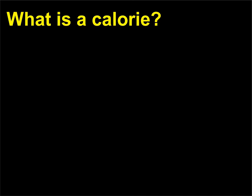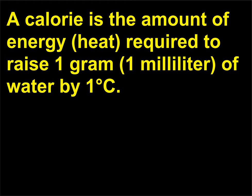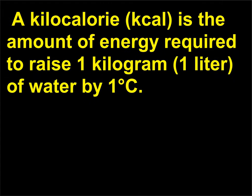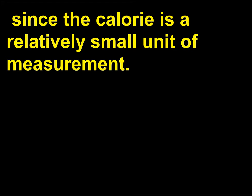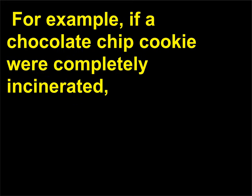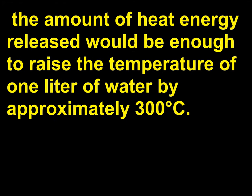What is a calorie? A calorie is the amount of energy (heat) required to raise 1 gram (1 milliliter) of water by 1 degree Celsius. A kilocalorie (kcal) is the amount of energy required to raise 1 kilogram (1 liter) of water by 1 degree Celsius. The kilocalorie is the unit used to describe the energy value in food, since the calorie is a relatively small unit of measurement. For example, if a chocolate chip cookie were completely incinerated, the amount of heat energy released would be enough to raise the temperature of 1 liter of water by approximately 300 degrees Celsius.